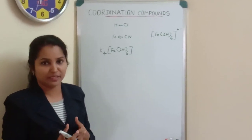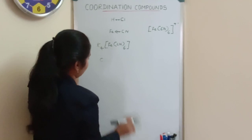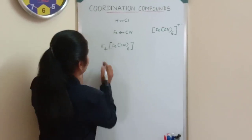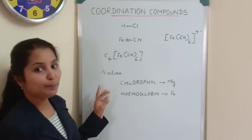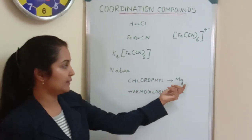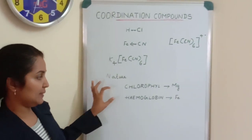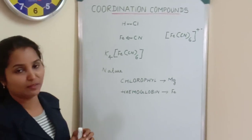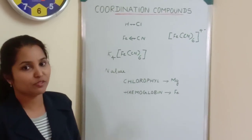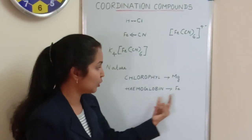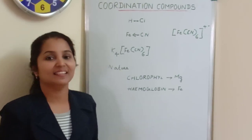In nature also, you can see different types of coordination compounds. For example, chlorophyll — the green pigment in leaves — is a coordination compound, and the central metal ion in it is magnesium. Hemoglobin, part of the red blood cell, is also a coordination compound, and the central metal ion present in hemoglobin is iron — this is a frequently asked question. This is the end of today's session. Thank you very much, see you again.